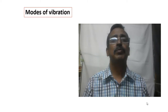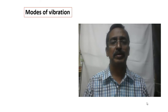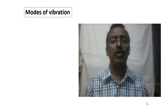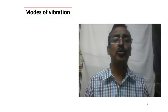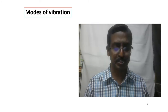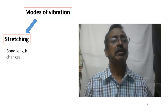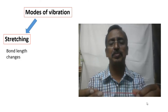There are two types of vibration. During a vibration, the bond distance may change, or the bond angle may change, or both may happen — that is, the bond distance as well as the bond angle may change.